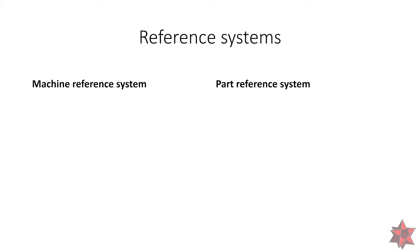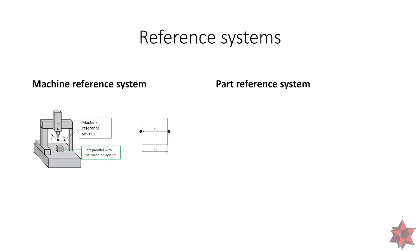Why do we need referent systems? On the left side we have the machine referent system right here, and let's say that you put a part on a machine table and the part is perfectly parallel to the machine system, as we can see here. You want to measure a distance of 50 millimeters. This is the ideal scenario.